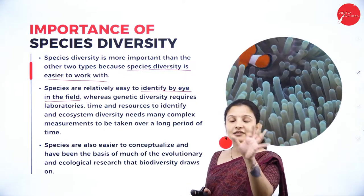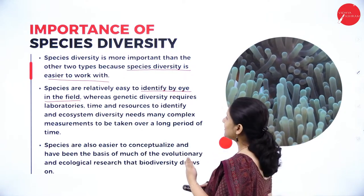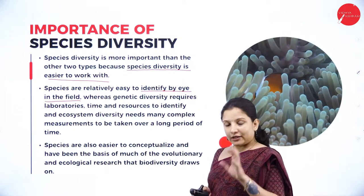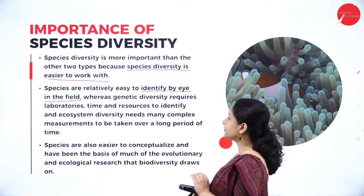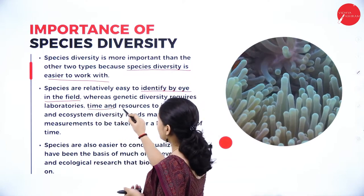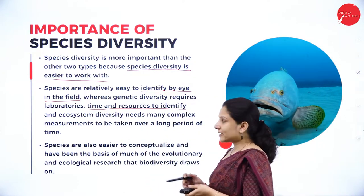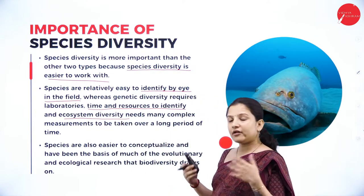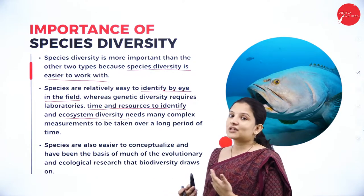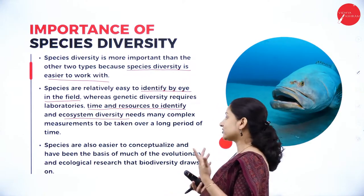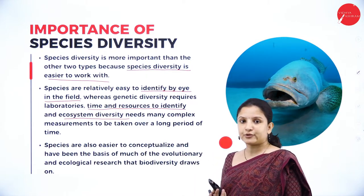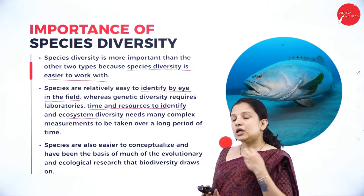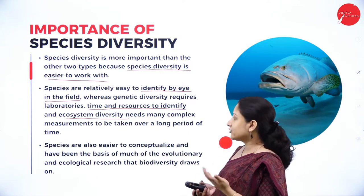Species are relatively easy to identify by the naked eye in the field itself, by looking at morphology or external characters, rather than going in for genetic diversity which requires a laboratory, a lot of equipment, and is quite costly. Ecosystem diversity also needs a lot of measurements over a larger area, taking many years. That is why species diversity is more preferred for studying biodiversity.